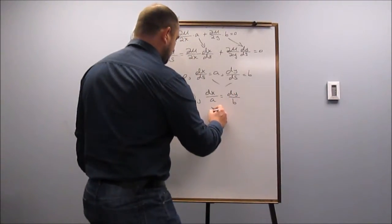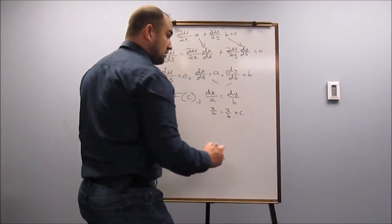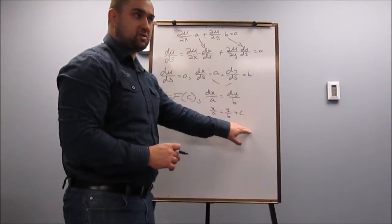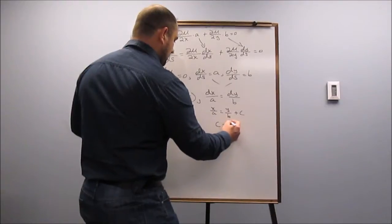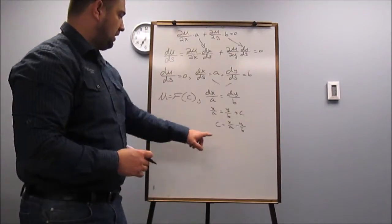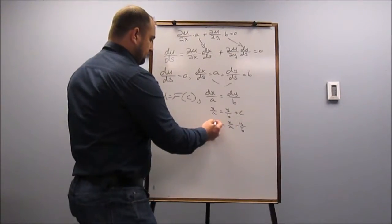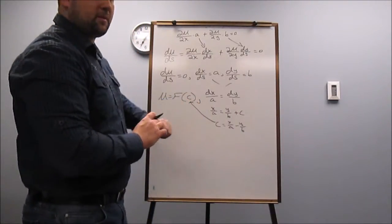Through integration I get X over A is equal to Y over B plus some constant. Okay, so now I want to solve this equation here for C, which gives me X over A minus Y over B, and this is the value for the constant.